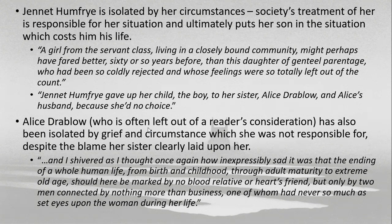Alice Drablow is blamed by her sister — which is understandable, as someone lashing out, though it's not Alice's fault. Alice did what she thought was right: she looked after Jeanette's son and presumably loved him. If we look at the nursery, it's interesting because the nursery is not something Jeanette put together — it's something Alice put together. That's the room Alice's adopted son lived in, so what you see there is an expression of Alice's love. And she's left with no one to mourn her passing — no blood relative or heart's friend.